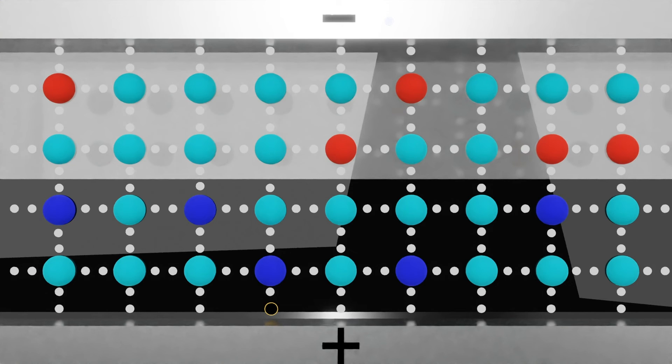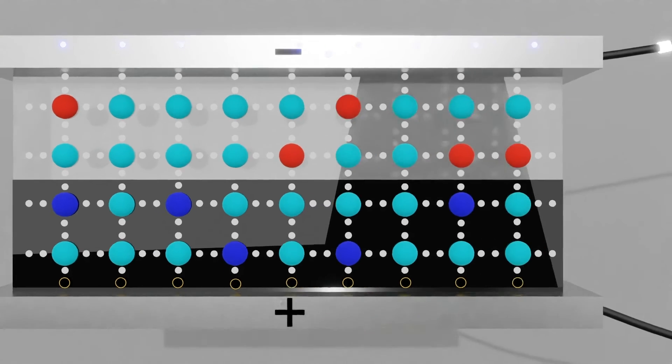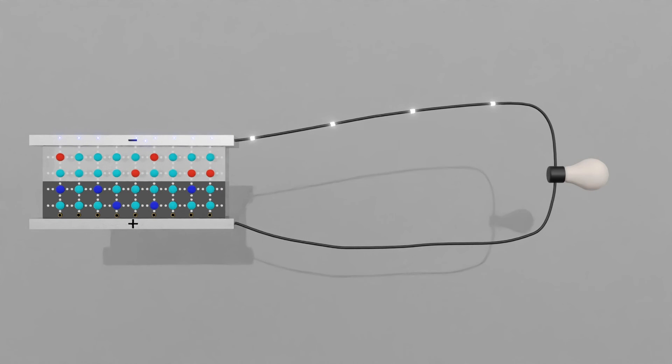The mobile electrons are collected by thin metal fingers at the top of the cell. From there, they flow through an external circuit, doing electrical work like powering a light bulb or charging a battery, before returning through the conductive sheet on the back.